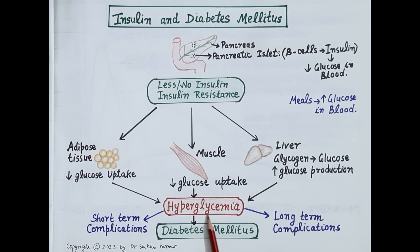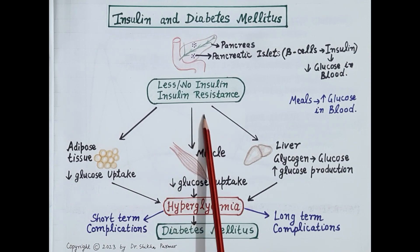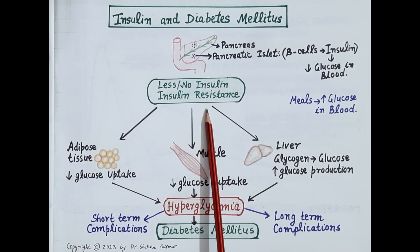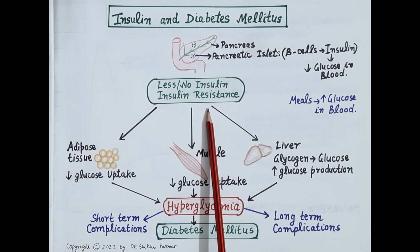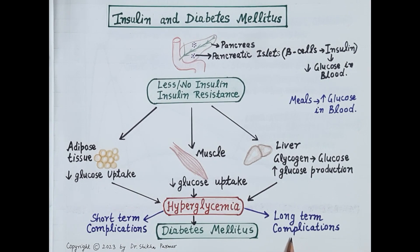Chronic long-standing hyperglycemia results in a disease called diabetes mellitus. Thus diabetes mellitus is a metabolic disorder characterized by hyperglycemia, caused due to lack of insulin secretion or insulin action, that is insulin resistance. This chronic hyperglycemia is the main culprit, causing short-term and long-term complications of diabetes mellitus.